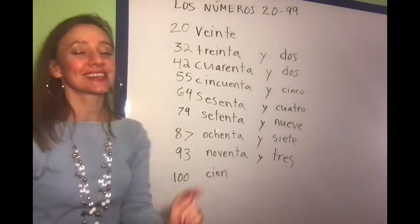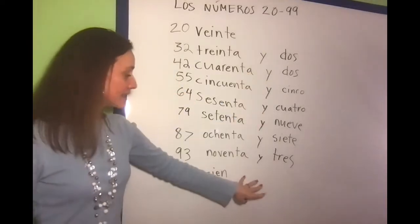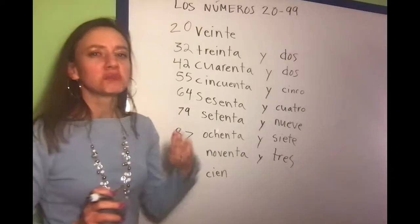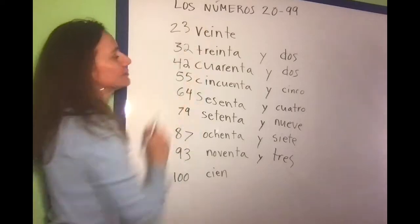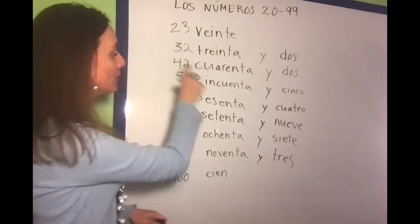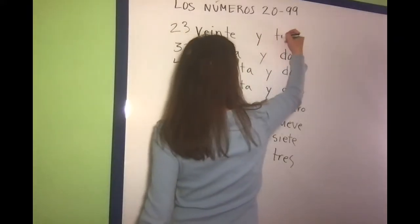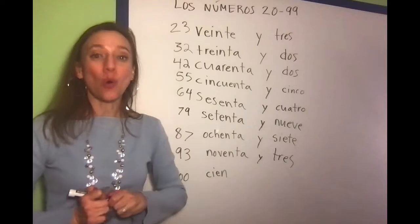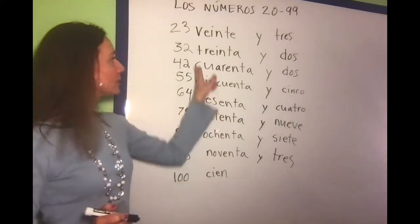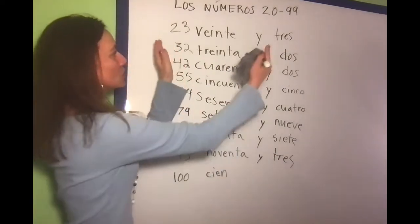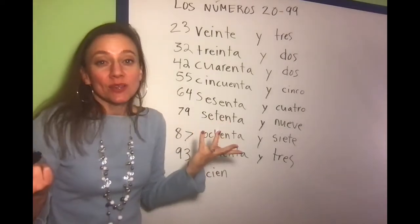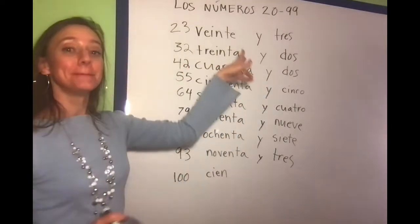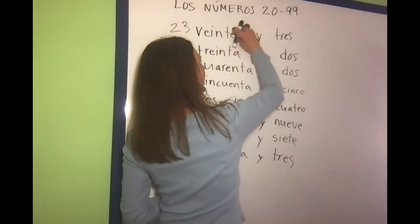Now I said I was going to leave 20 for last because it's a little bit different. The way that we did it here, some people still write 20 the same way. Let's pretend I wanted to say 23. The old way — way back in the day — people used to say veinte y tres. You might still see some people write it that way, maybe in old textbooks. But the modern way is to squish it all into one word, maybe because when we speak fast it kind of sounds like that.